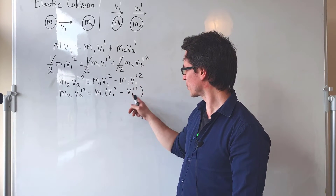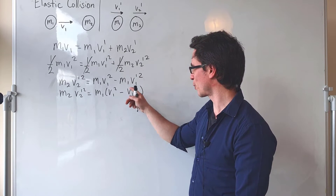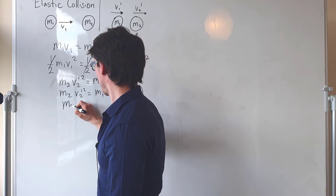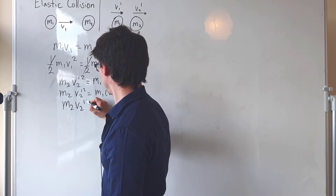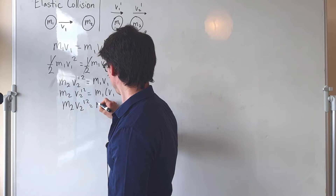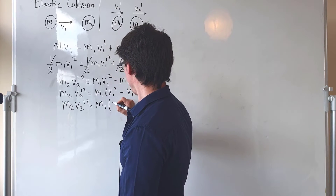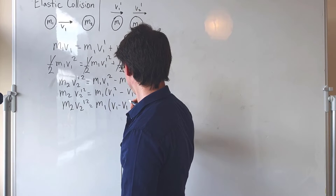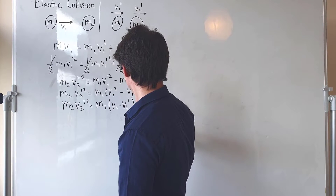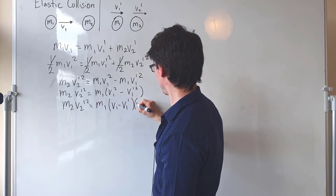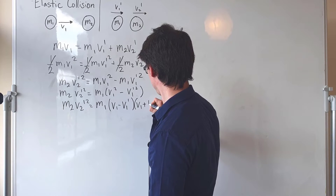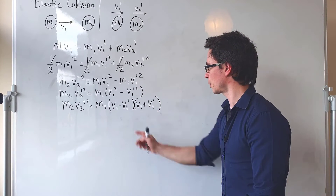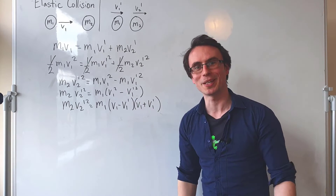Now, ideally I want to get rid of these squares, so I'm going to use a simple algebra identity: m2 v2 prime squared equals m1 times (v1 minus v1 prime) times (v1 plus v1 prime), because multiplying those factors out gives us the difference of squares.